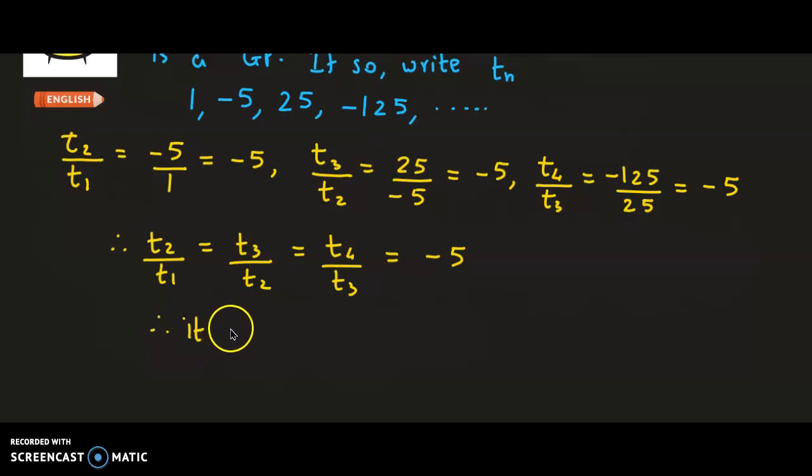It is a geometric progression with the first term A = 1 and common ratio R = -5.